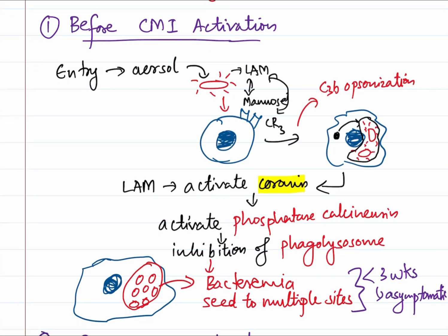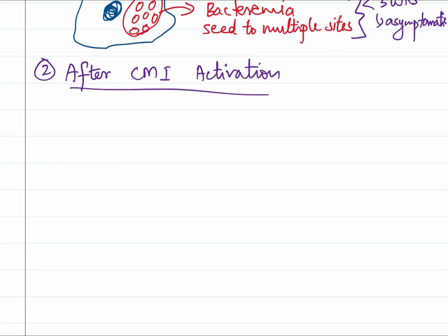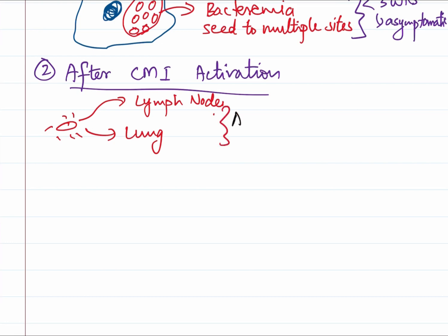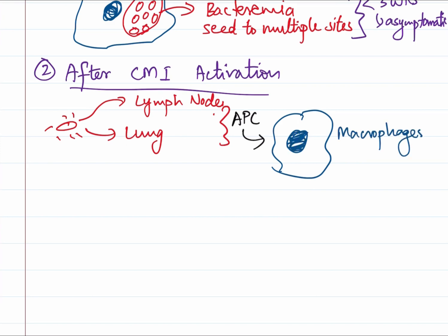Next is the activation of cell-mediated immunity. The bacilli, as we have said, are seeded into multiple sites by bacteremia. Two sites are important: first the lymph node, and second the lung. The macrophages act as antigen-presenting cells - the alveolar macrophages and the macrophages inside the lymph nodes will present the mycobacterial antigen to the T-helper cells.